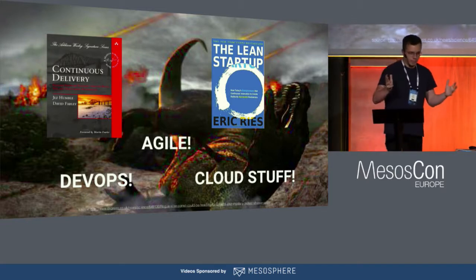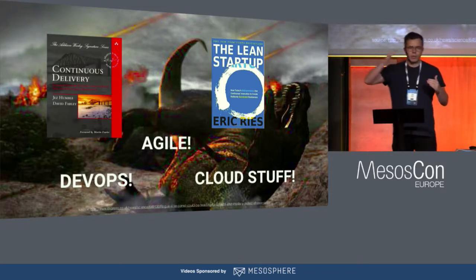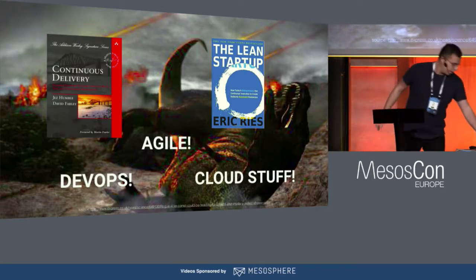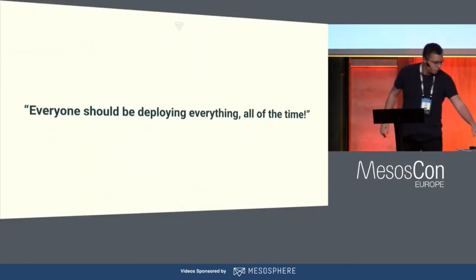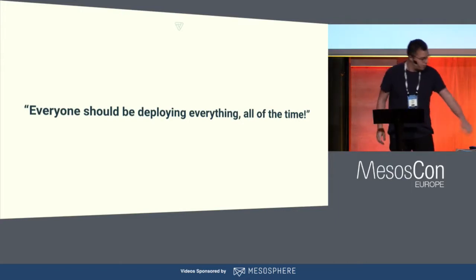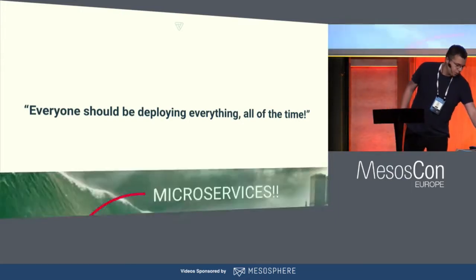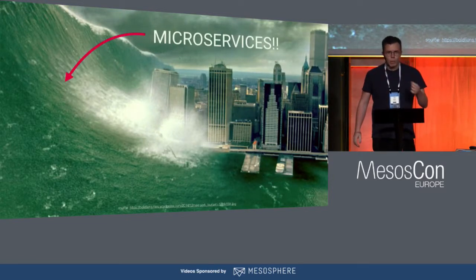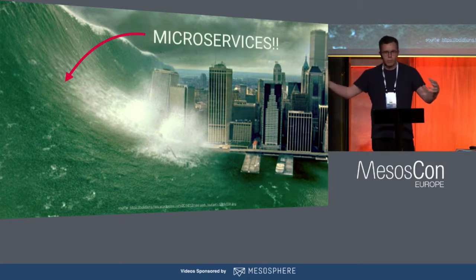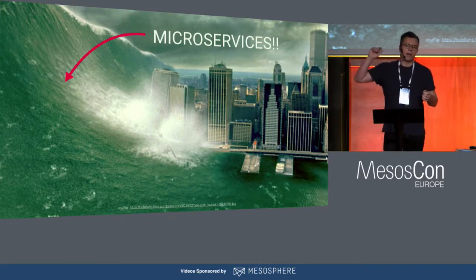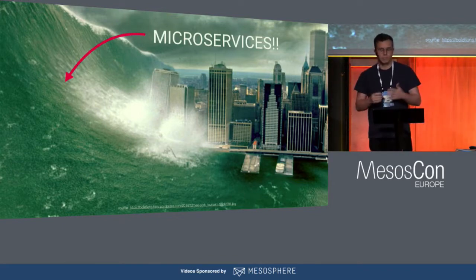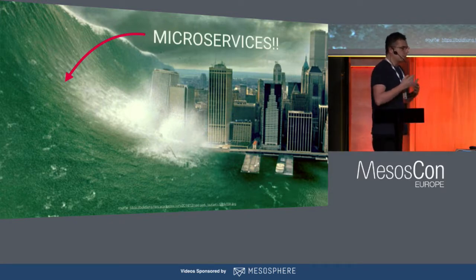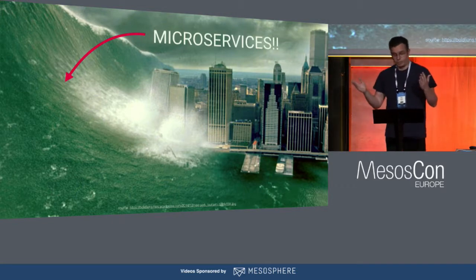But the horror doesn't end there. If we fast forward another two years, we come to the great flood of 2013: microservices. If deploying one monolith application was already not enough, they're telling us to split it up into multiple deployments — and that's just crazy. I just heard yesterday at the keynote that Netflix has 380 services in production. So either these people must be insane, or evil, or both.